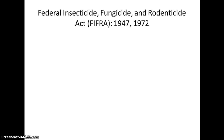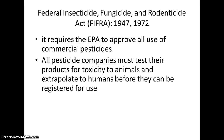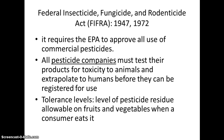The Federal Insecticide, Fungicide, and Rodenticide Act (FIFRA), passed in 1947 and amended in 1972, required the EPA to approve all commercial pesticides. Companies were required to test their products for toxicity — typically on mice or rats — and extrapolate results to humans before registering them for use. Keep in mind, it was the companies themselves that tested their own pesticides. They also had to determine tolerance levels: the allowable level of pesticide residue when a consumer eats fruits or vegetables.